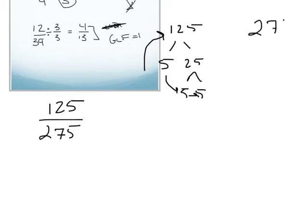Now let's check out 275. So we know that 5 is a factor, so 275 divided by 5 is 55, and then 55 is 5 times 11. So when we want to use the factor tree, we want to find the prime factorization.